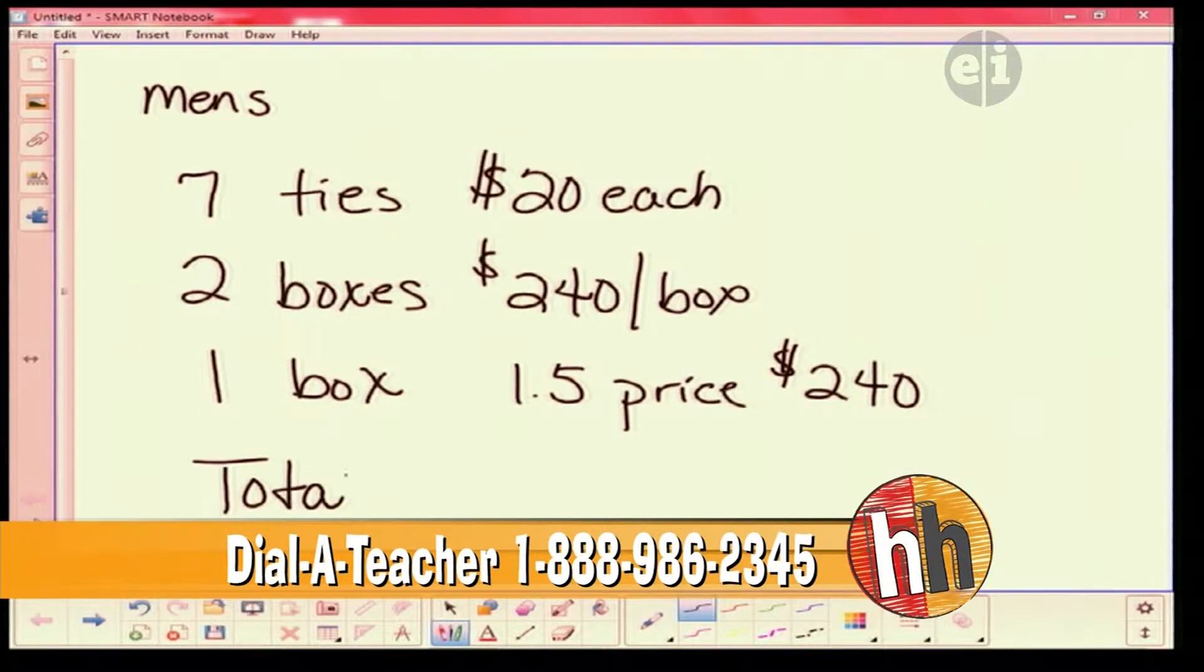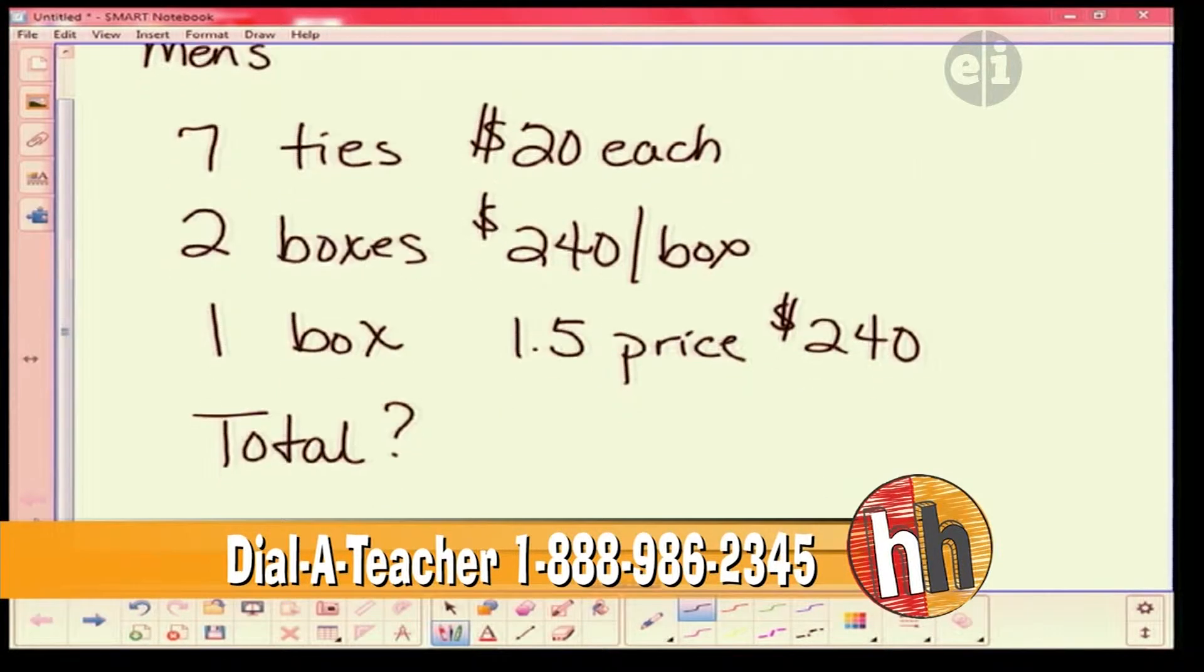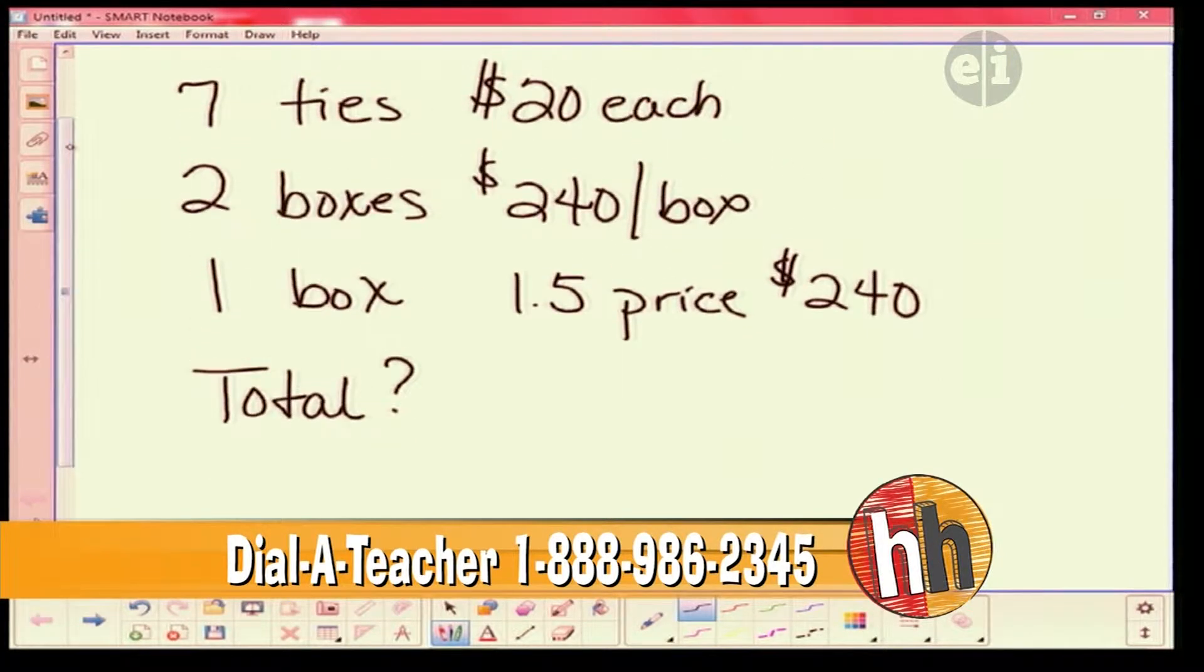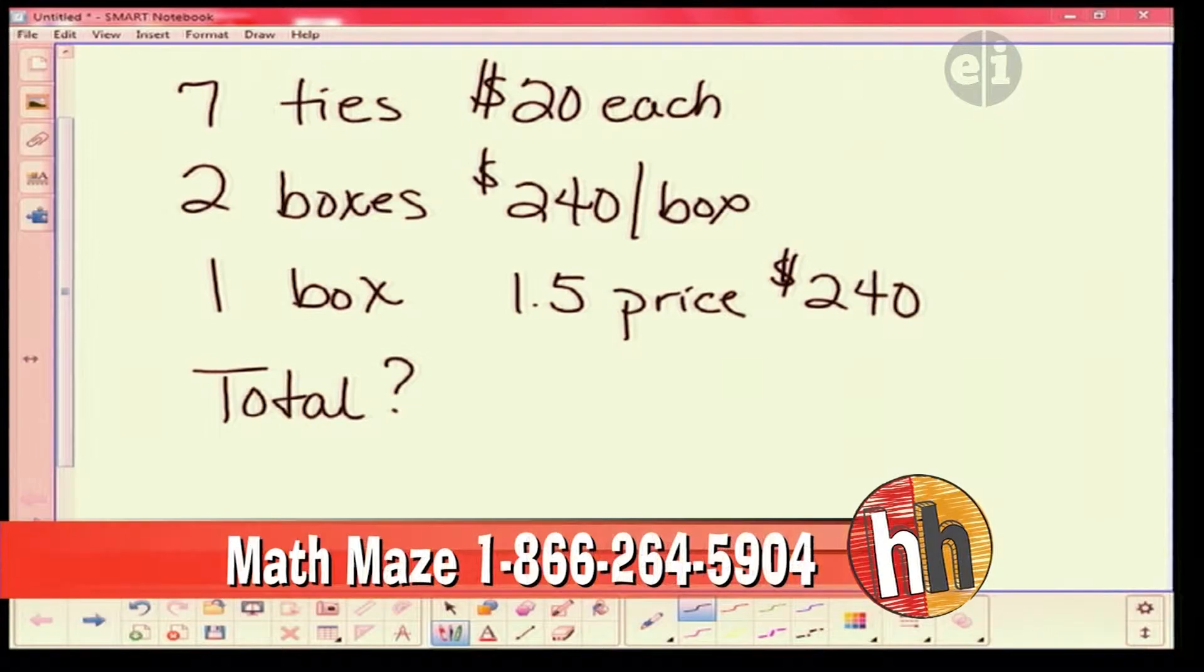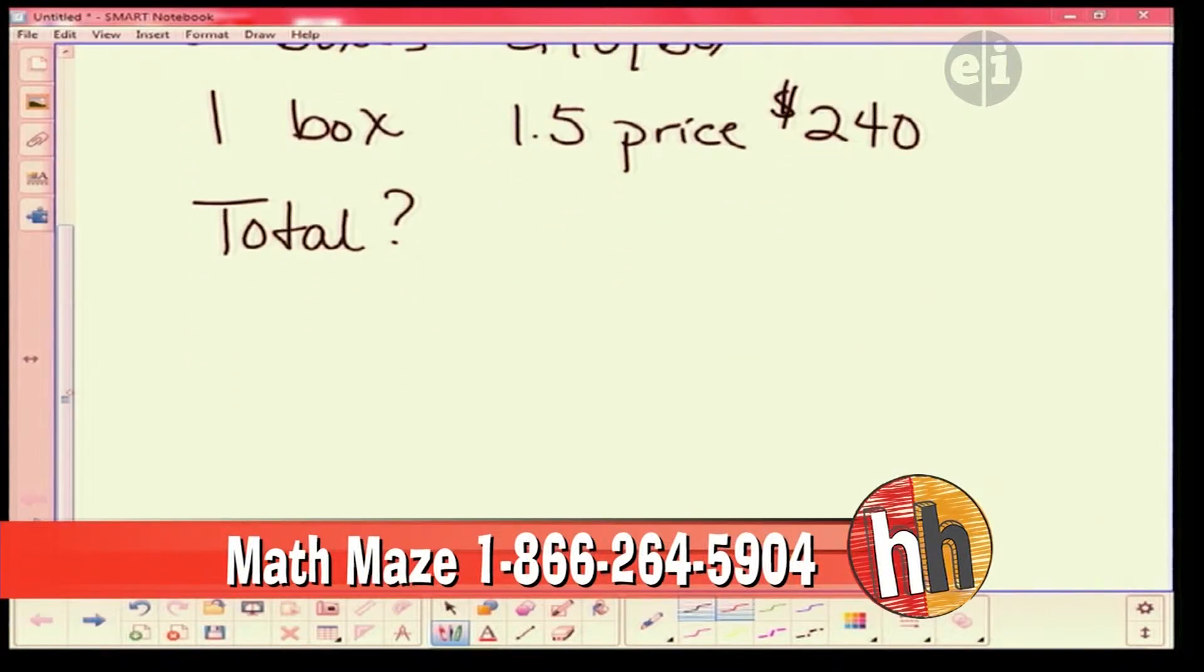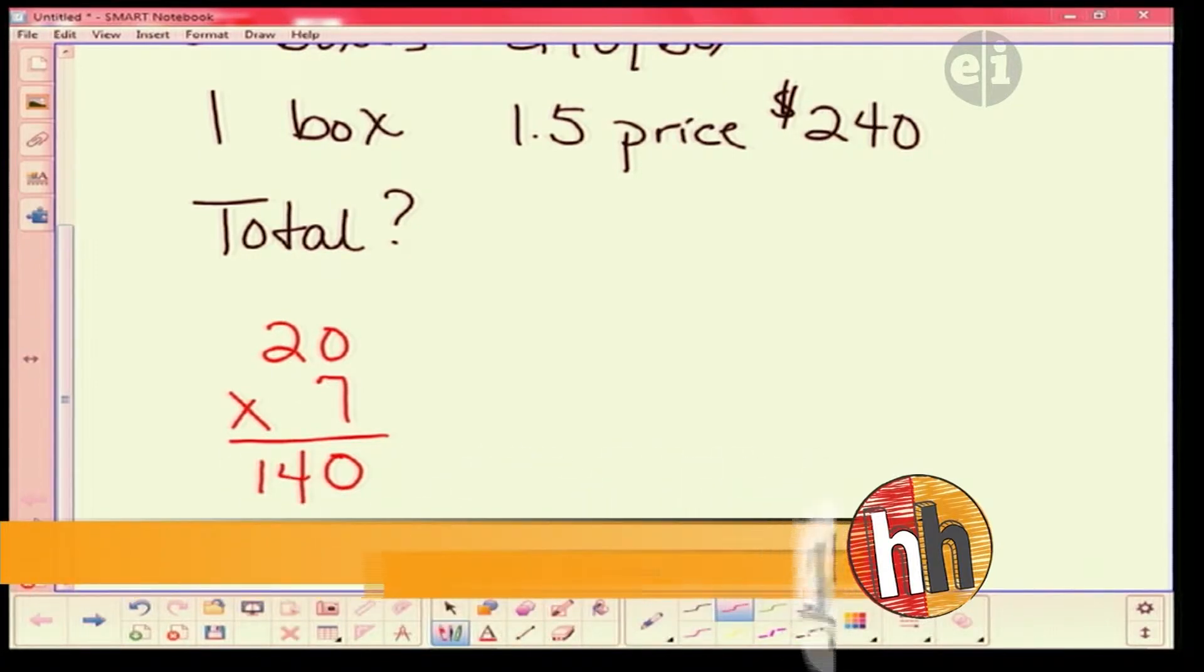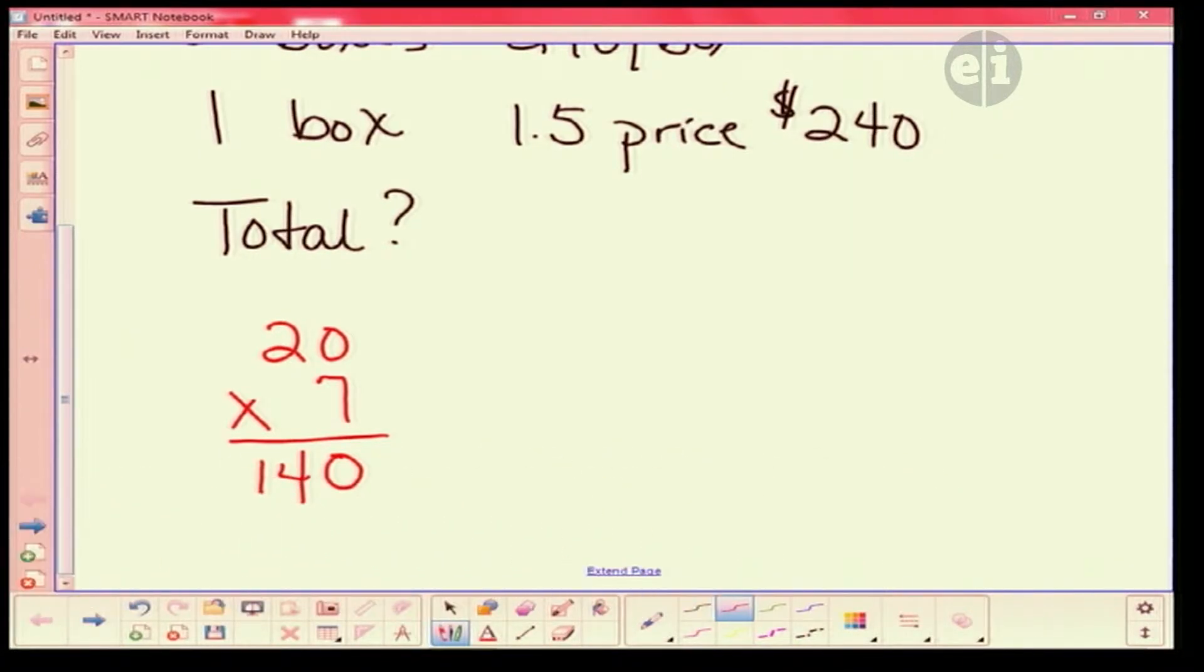What do you think we're going to do? You are going to multiply $20 times seven. Let's do that. We've got $20 times seven ties, correct? Yes. And seven times zero? Is zero. And two times seven? 14. So we have $140 so far.